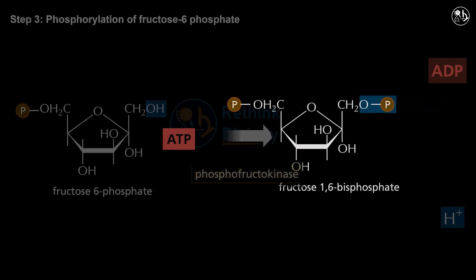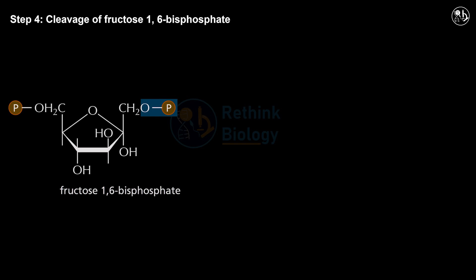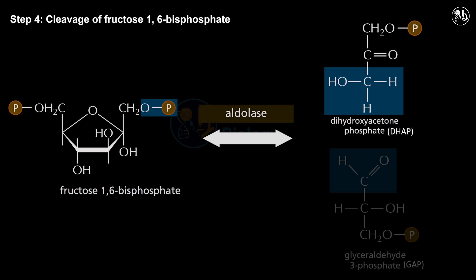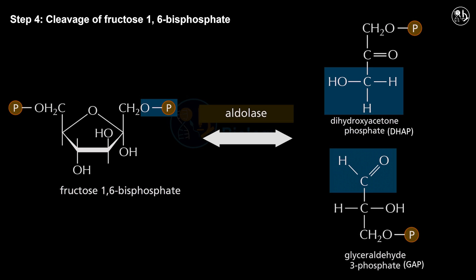Step 4: Cleavage of fructose 1,6-bisphosphate. In this step, the enzyme aldolase splits fructose 1,6-bisphosphate into dihydroxyacetone phosphate (DHAP) and glyceraldehyde-3-phosphate (GAP), which are isomers of each other. DHAP has a double bond between its second and third carbon atoms, which is a ketone group, while GAP has a double bond between its first and second carbon atoms, which is an aldehyde group.